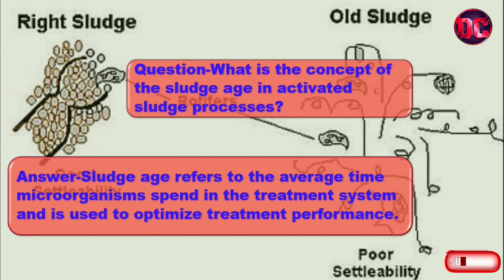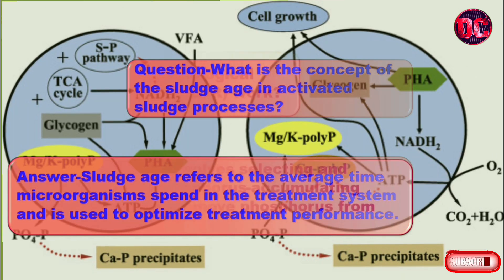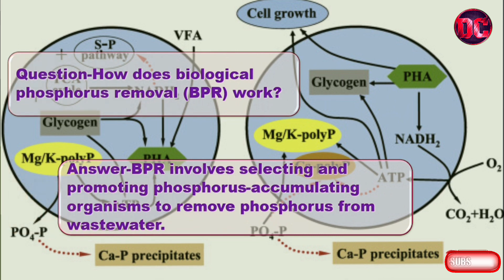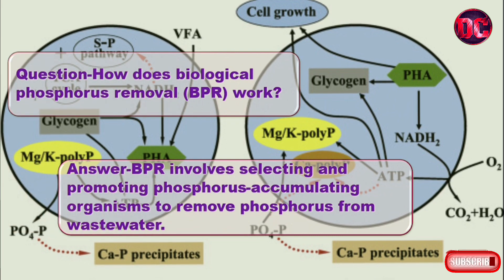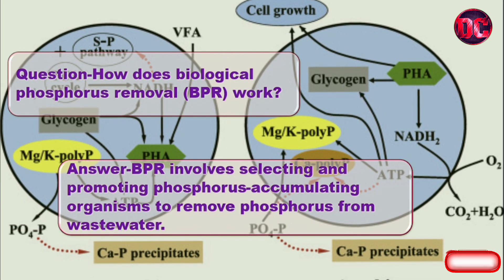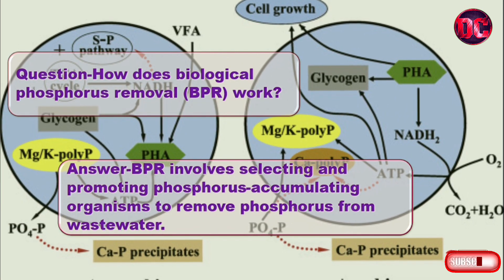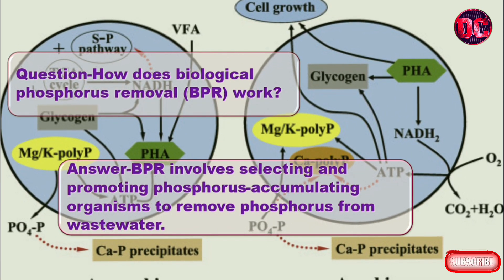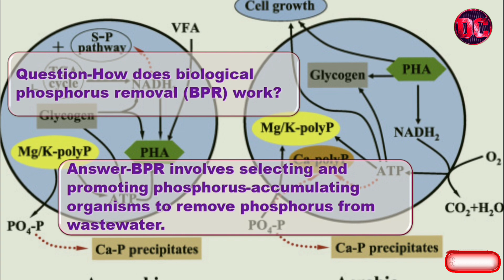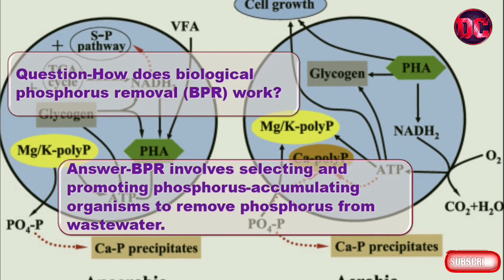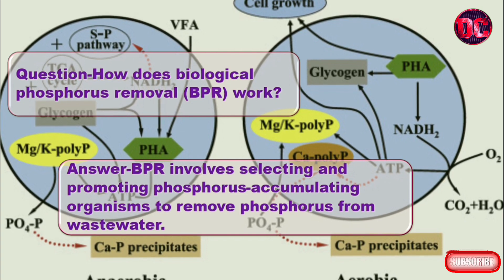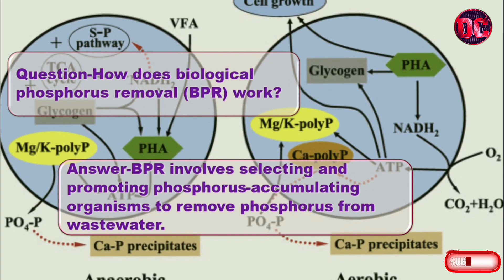Question: How does biological phosphorus removal (BPR) work? Answer: BPR involves selecting and promoting phosphorus accumulating organisms to remove phosphorus from wastewater.